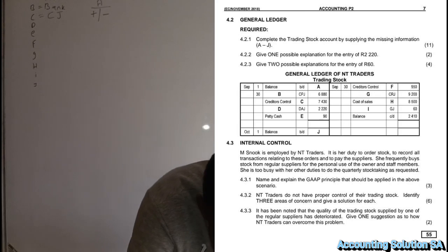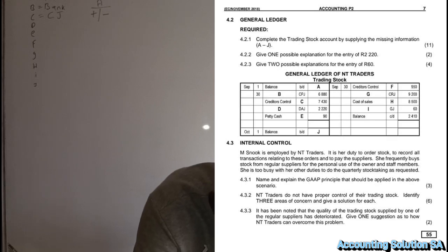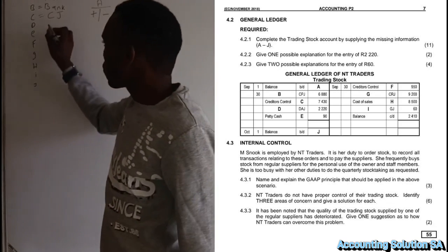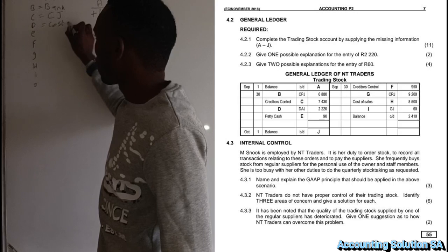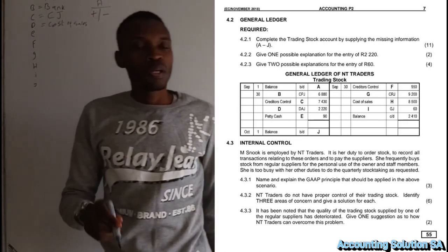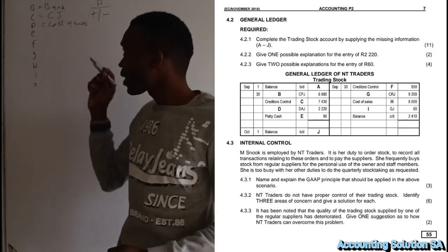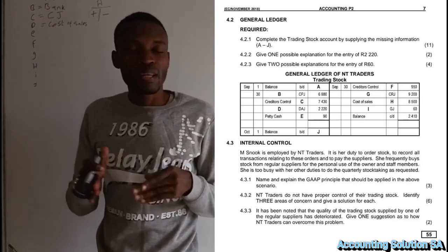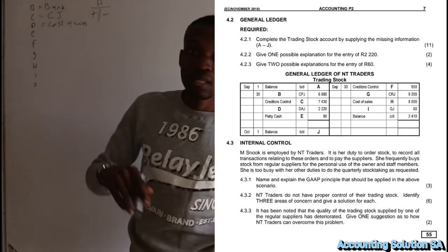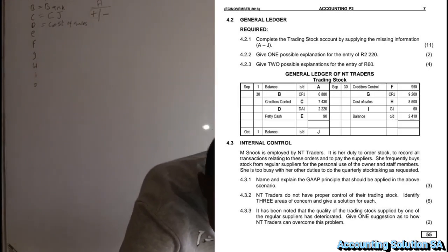Number D involves the debtors allowance journal. When we talk about the debtors allowance journal, it means that stock has been returned by the customer. In this case, cost of sales is affected — cost of sales is increasing the trading stock account because the client has returned goods. Under the inventory account we only record cost of sales, not sales. So cost of sales increases the inventory account.